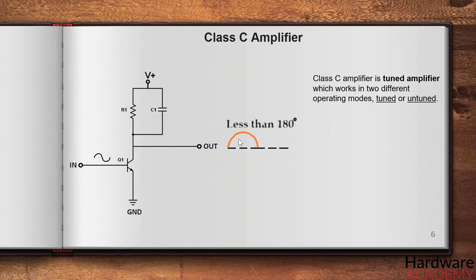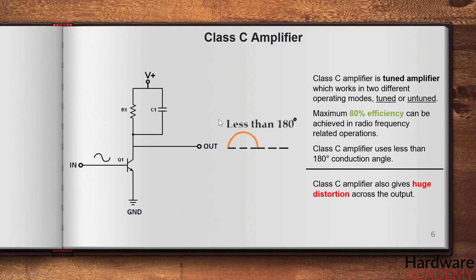The efficiency of class C amplifier is much more than the A, B, and AB. So a maximum 80% efficiency can be achieved in radio frequency related operations. The interesting thing here is that class C amplifier uses less than 180 degree conduction angle and during the untuned mode, the class C amplifier unfortunately gives huge distortion across the output. But in typical uses, class C amplifier gives 60 to 70% efficiency.